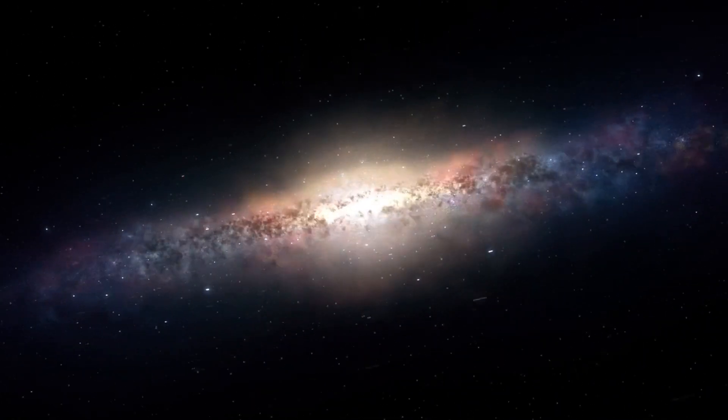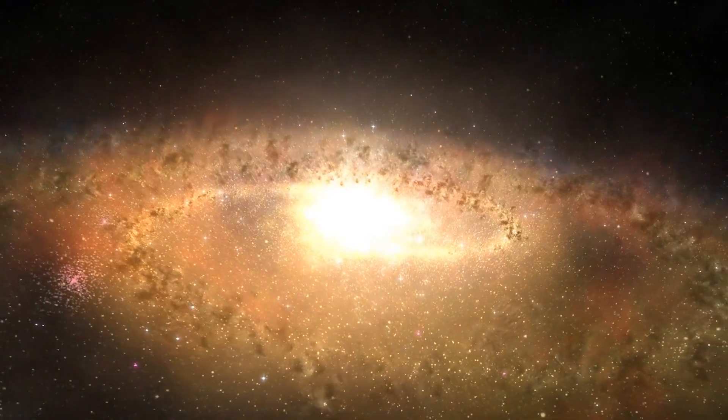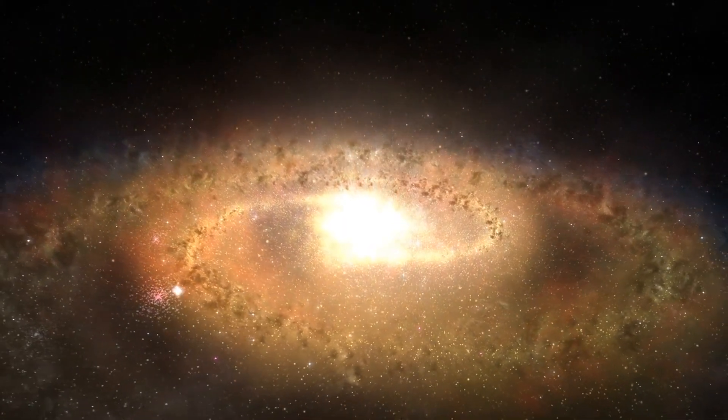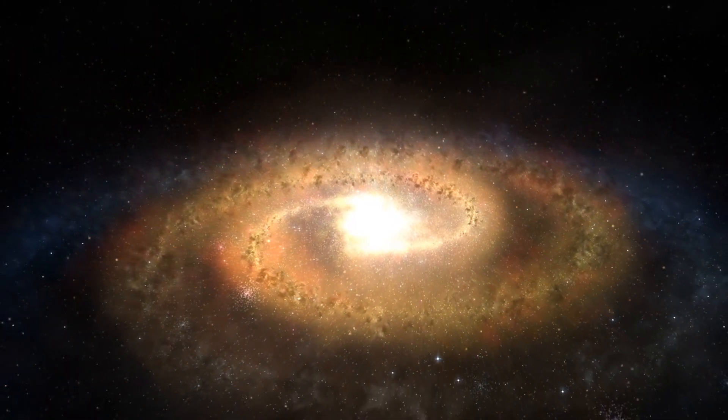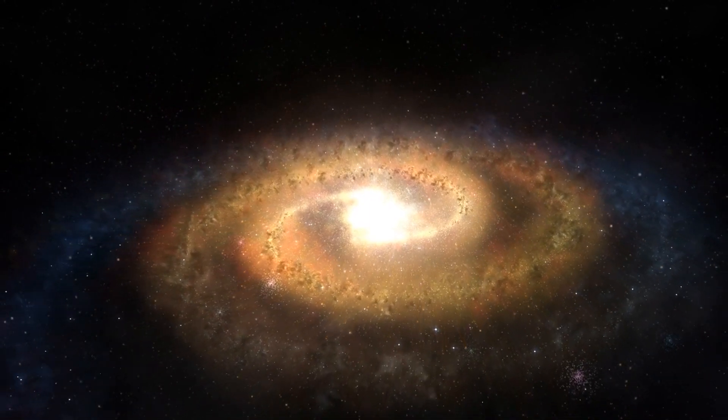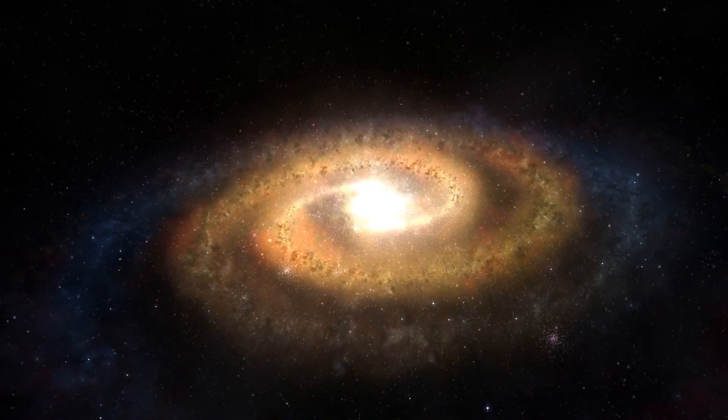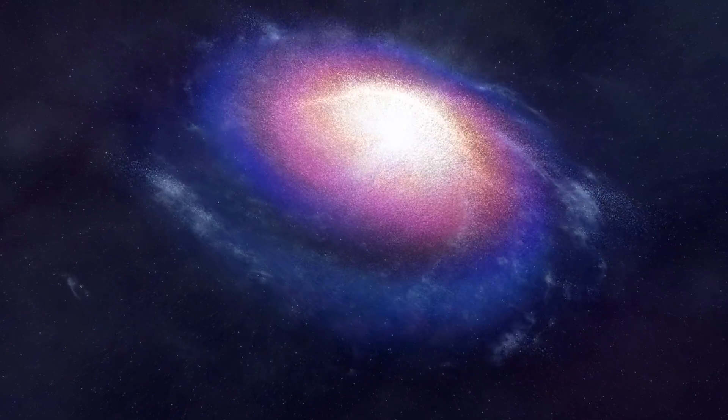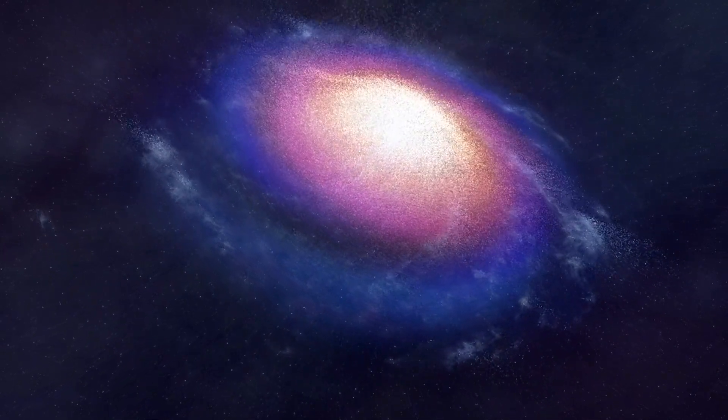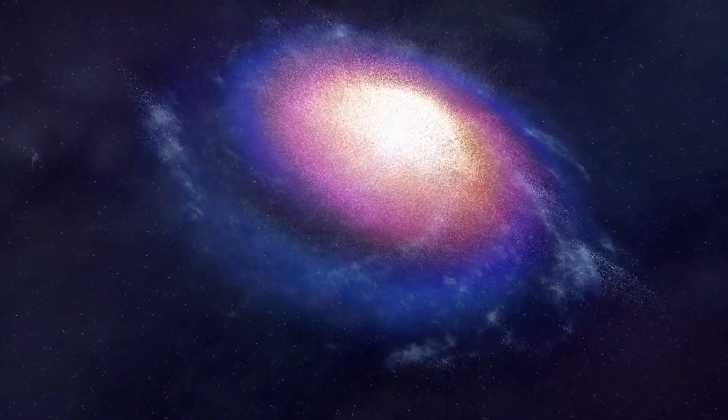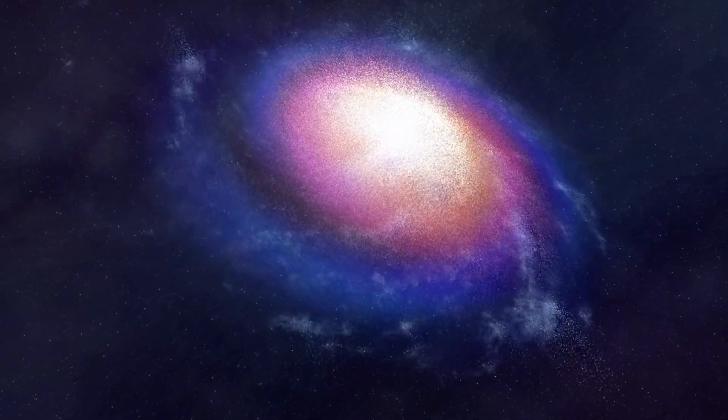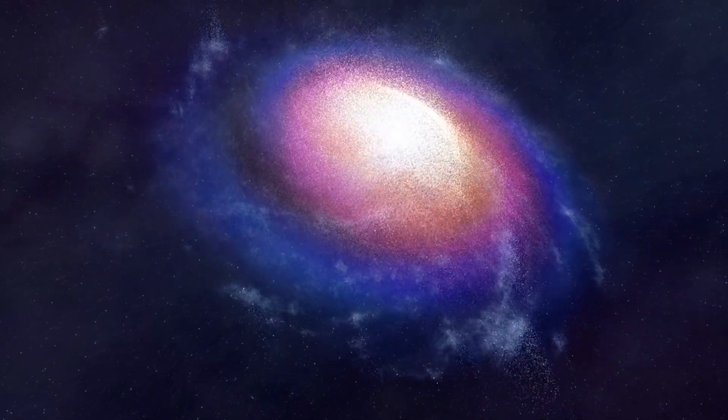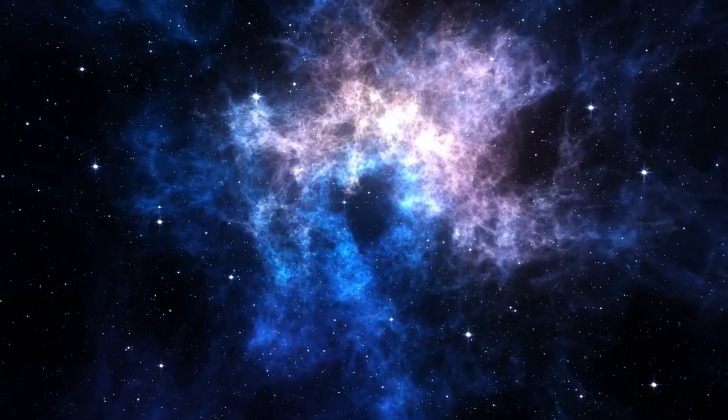This halo isn't visible, but its presence can be inferred because it exerts a significant gravitational force. This gravitational force is what keeps the stars within the galaxy moving in stable orbits instead of flying off into space. Without the extra gravity provided by this dark matter halo, the high speeds of the galaxy's outer stars would cause them to break away from the galaxy's gravitational pull, leading to the disintegration of the galaxy itself.